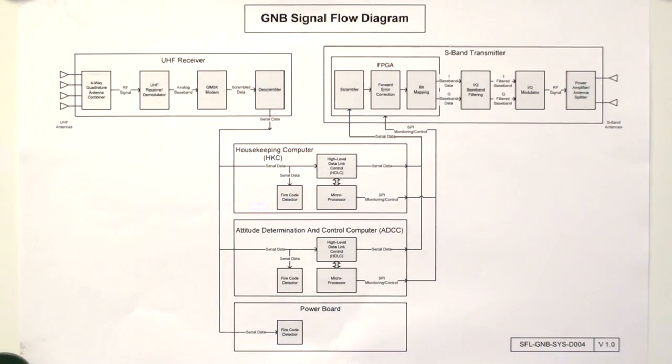Kiedy komputer odbierze telekomendę, będzie mógł w jakiś sposób zareagować i wysłać tak zwaną telemetrię w postaci odpowiedzi. Taka telemetria trafi do nadajnika w paśmie S, czyli 2.2 GHz, gdzie następnie zostanie zeskramblowana, czyli dodana zostanie informacja pseudolosowa do sygnału, aby łatwiej był ten sygnał przesyłać drogą radiową.